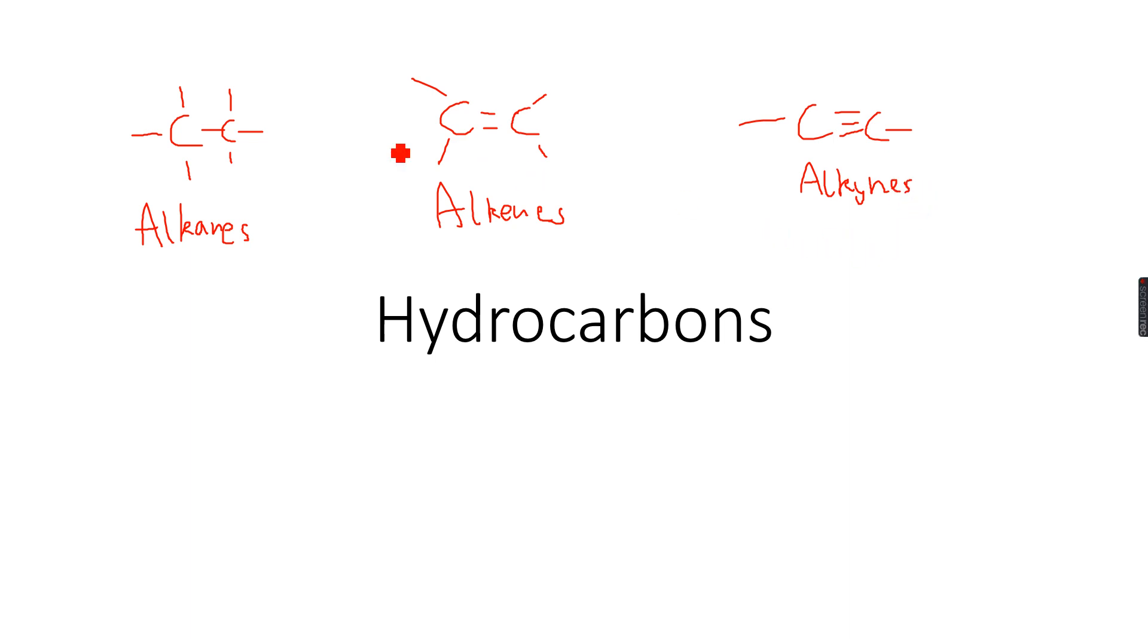Now you can see that alkanes are sp3 hybridized because each carbon atom is forming four sigma bonds. If you do not know about hybridization and sigma bonds and pi bonds, then you should watch my playlist on chemical bonding. So alkanes are sp3 hybridized because each carbon atom forms four sigma bonds.